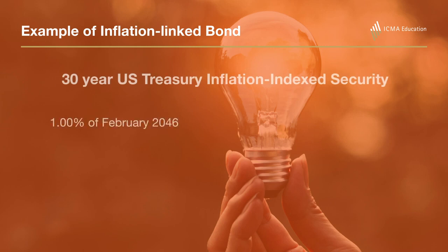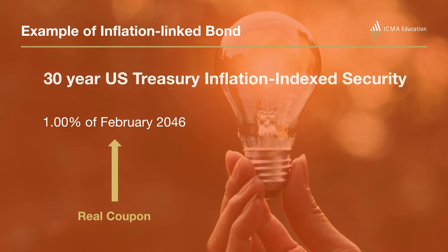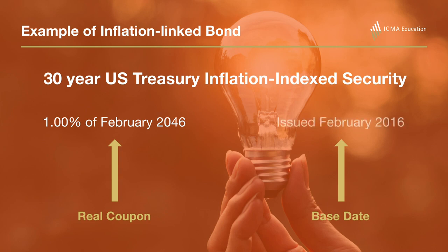Inflation-linked bonds pay a real coupon, shown here on the left-hand side, uplifted by realized inflation. The real coupon signals in percentage terms what extra goods and services an investor will be able to afford by deferring consumption until some future date. In this example, we illustrate a long-dated inflation-linked bond issued by the U.S. government. The bond offers a real coupon of 1%, meaning the cash flow received would ensure that the investor will be able to afford 1% more goods and services relative to a base date, which in this case is 2016.